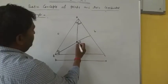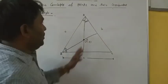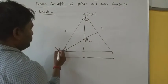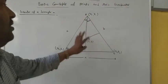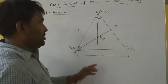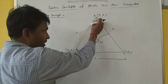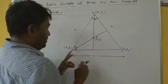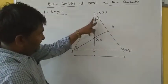We have to find the coordinate of this in-center. Let the coordinate of in-center be x, y. Let the coordinates of vertices of the triangle be x1, y1; x2, y2; x3, y3. We are going to apply two theorems: first, the angle bisector theorem. According to the angle bisector theorem, which we have already studied in class 10, an angle bisector divides the opposite side.